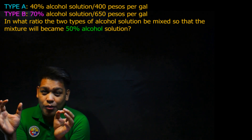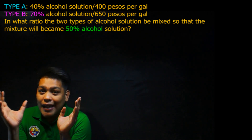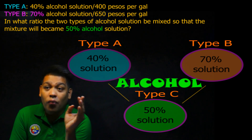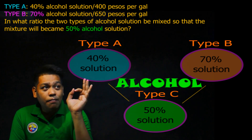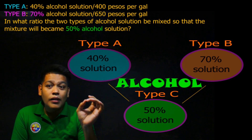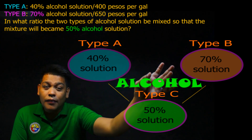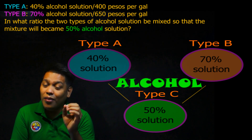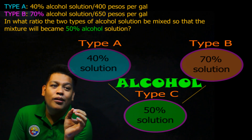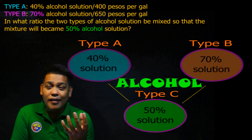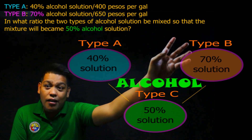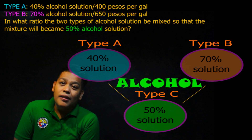For the alcohol problem, we have two kinds of alcohol: a 40% solution priced at 400 pesos per gallon, and a 70% solution priced at 650 pesos per gallon. Now, if you want to make a 50% solution, how many gallons of the 40% solution and how many gallons of the 70% solution do you need to combine to produce a 50% solution?